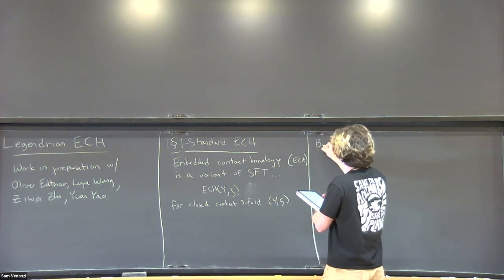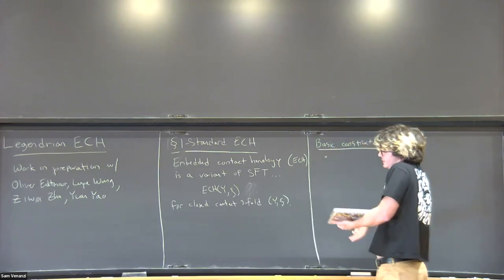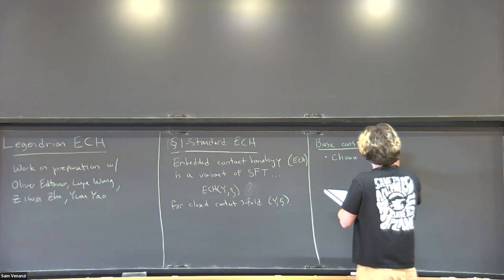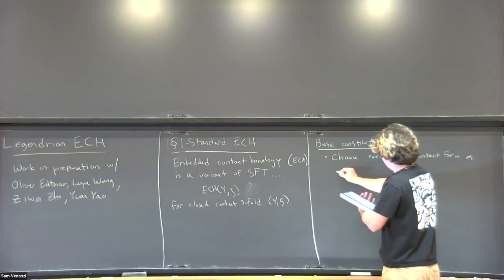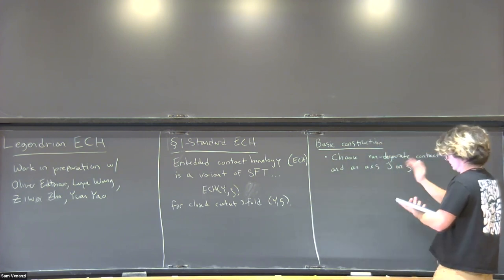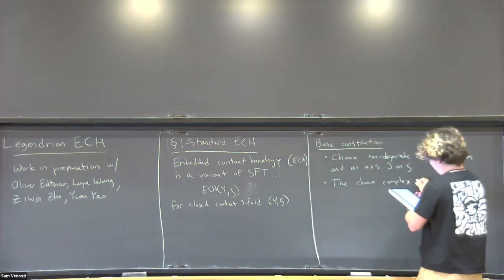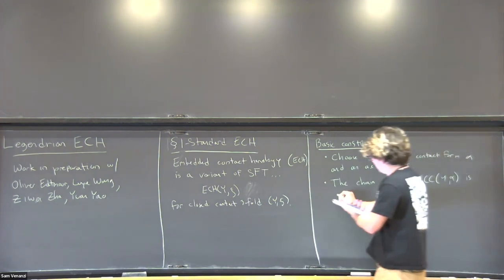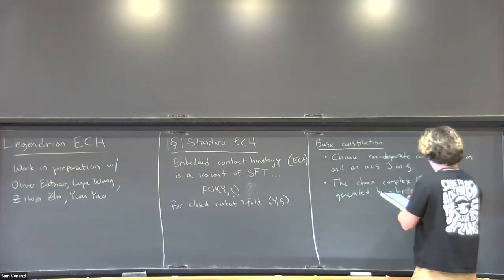The basic construction goes like this. Just like regular symplectic field theory, you start by choosing some superfluous data: first you choose a non-degenerate contact form alpha and an almost complex structure J on the contact structure satisfying some compatibility properties. Then the chain complex ECH is generated by orbit sets.